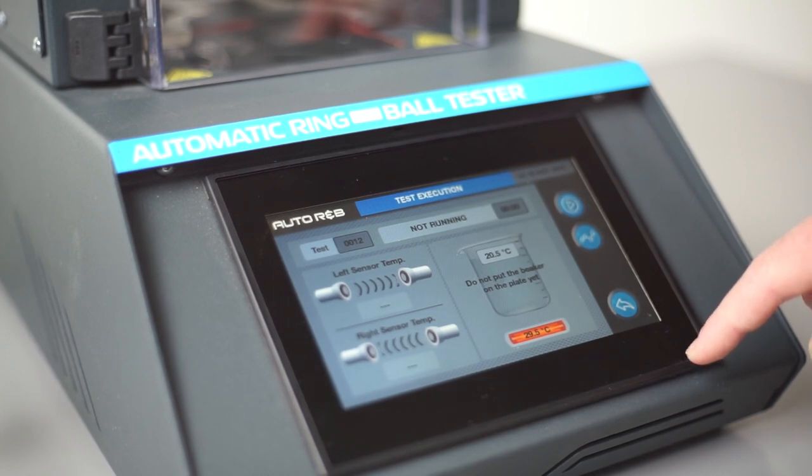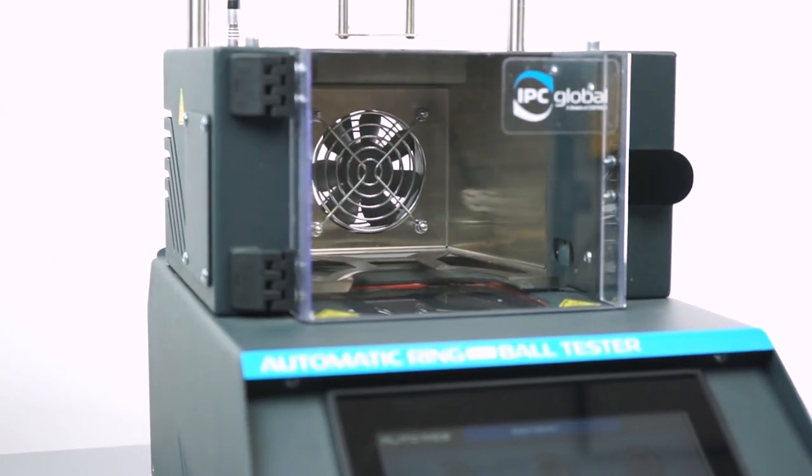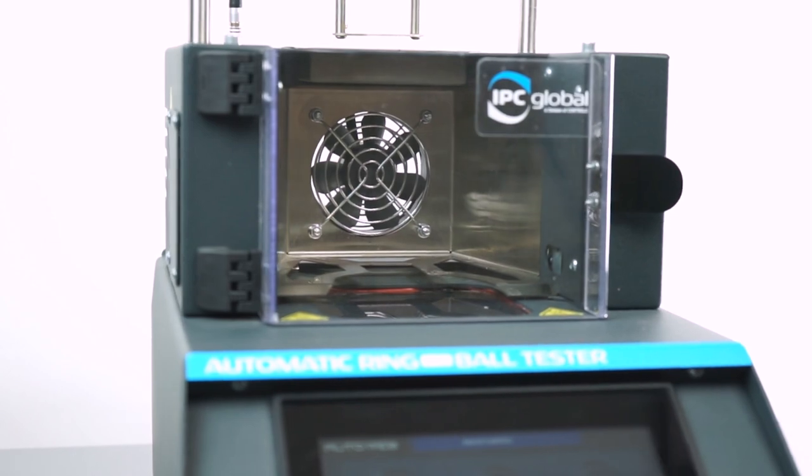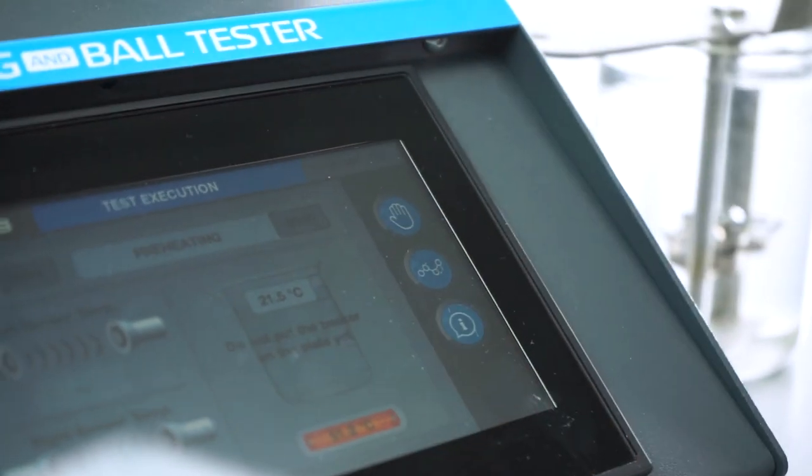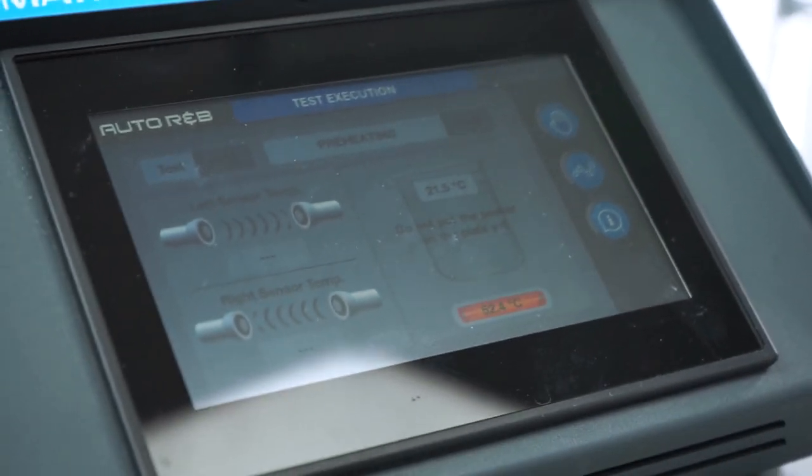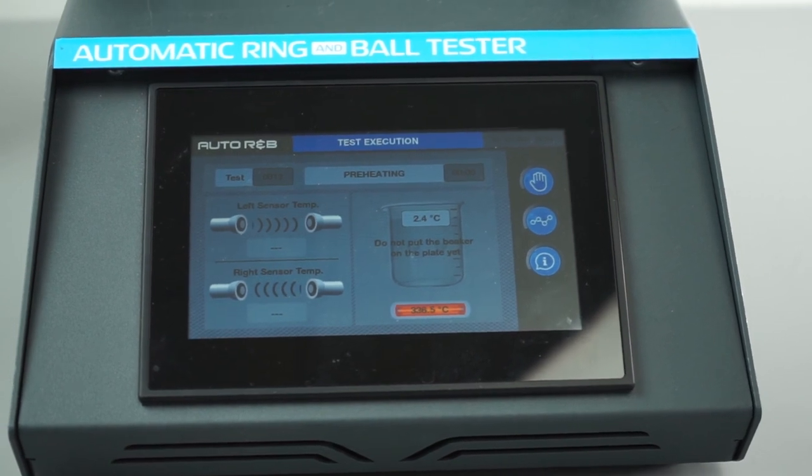Without putting the beaker and samples onto the hotplate, push the start button to start the preheating. The hotplate starts preheating and the control panel confirms when the test is ready to start.